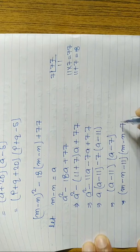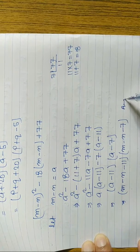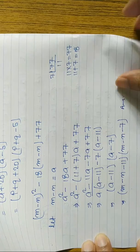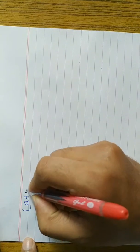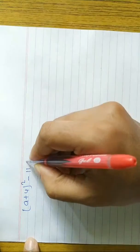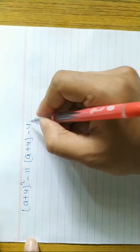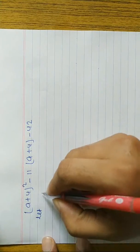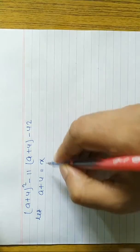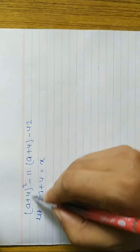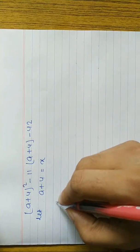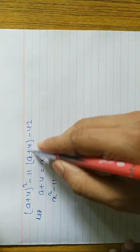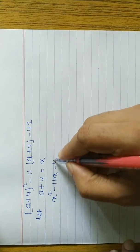Next question: (a + 4)² - 11(a + 4) - 42. This question is a little bit different. We let a + 4 equal to x. In place of (a + 4)², we write x², minus 11, in place of (a + 4) we write x, minus 42.